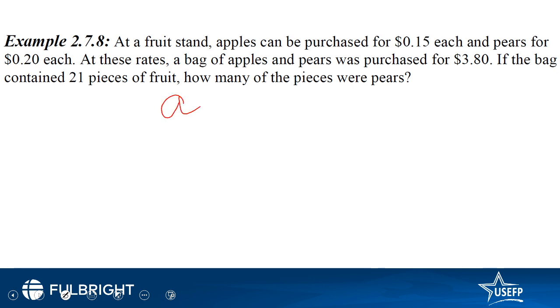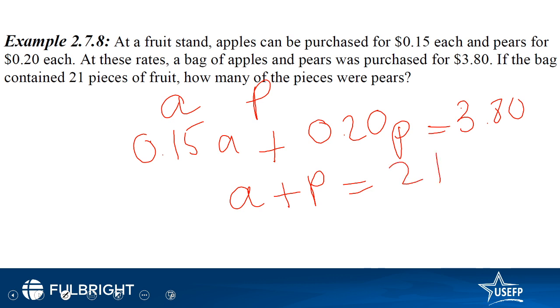Let's say a man bought A apples and P pears. So the money he spent on apples was 0.15 into A and on pears was 0.20 P equals 3.8 dollars. Now the total pieces, A plus P equals 21. We have to find the value of P, so we need to solve both of these equations simultaneously. You rearrange this equation and substitute the value of A here. Now your equation only has P in it so you will be able to find the number of pears.